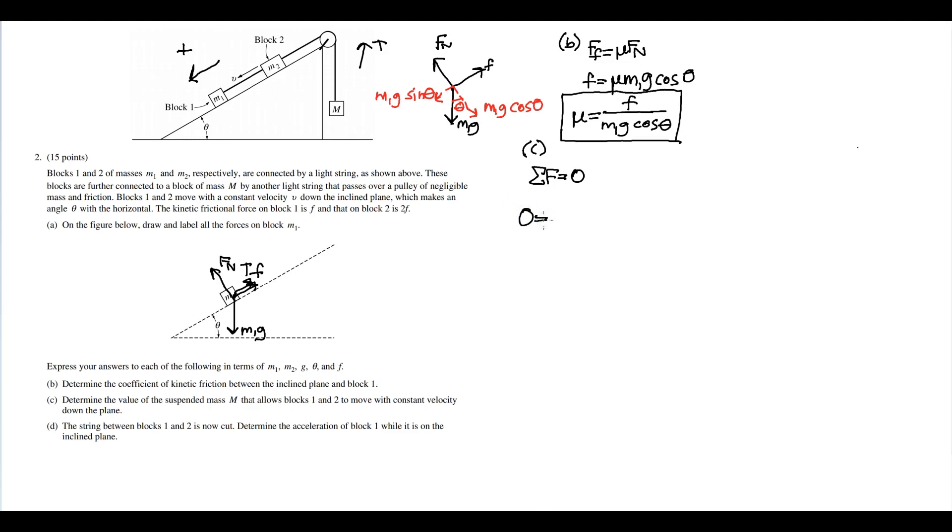So that'll equal the external forces. That means m1 g sine theta plus m2 g sine theta. Tension does not count because the tension is an internal force; it acts on two of the blocks and can be cancelled out. However, friction acts exclusively on different blocks.